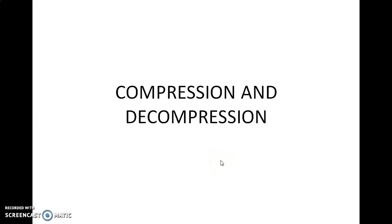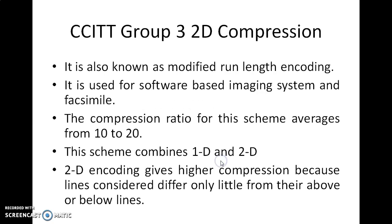Hi, this is part 5 of compression and decompression. In this we are going to see CCITT Group 3 2D compression. Previously it was 1D compression; this is 2D compression. This is also called modified run length encoding, software based.